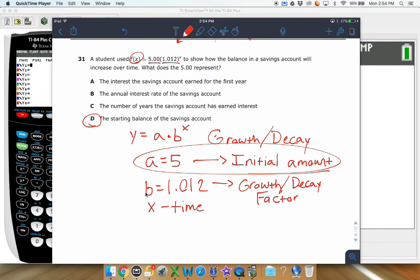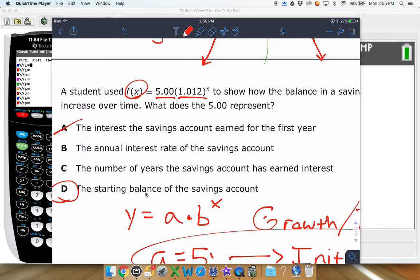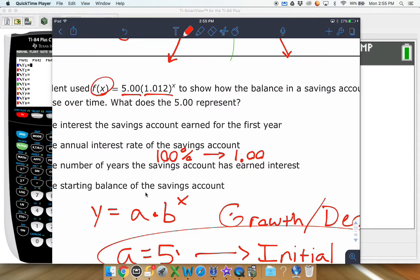So the other options are going to work out the interest savings account for the first year. Well, if we wanted to figure out what was going on at the first year, we would need to replace that x with a 1. So definitely not that. The annual interest rate of the savings account. That's actually not the interest rate. The interest rate has to deal with this number here. And actually to find it, this is kind of like a percentage. This is 100%. 100% is kind of like saying 1.00 and then however many decimals you go out. So actually this 12 right there, that 0.012, is kind of dealing with your interest rate right there. So that means your interest rate is I think 1.2% right there.